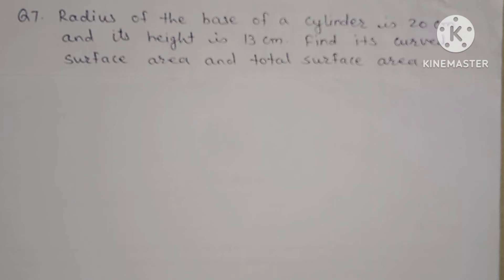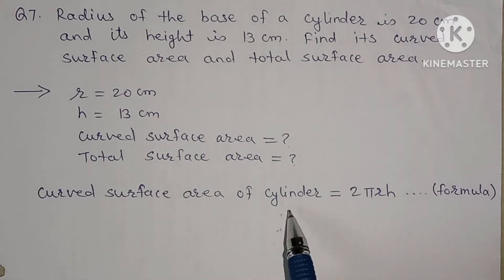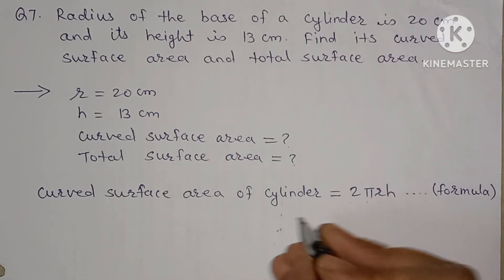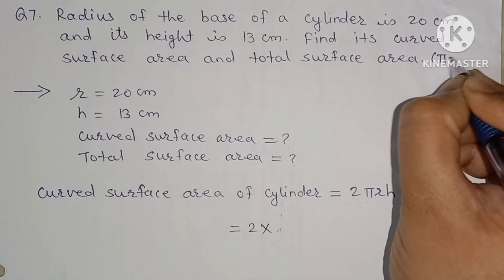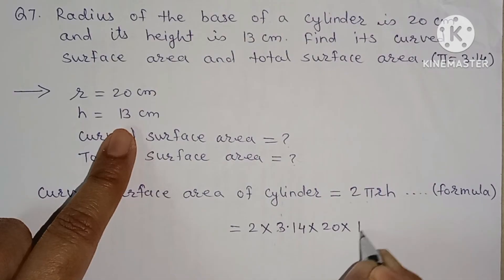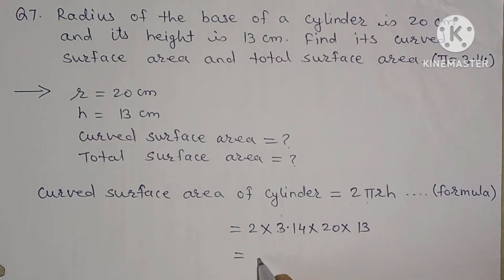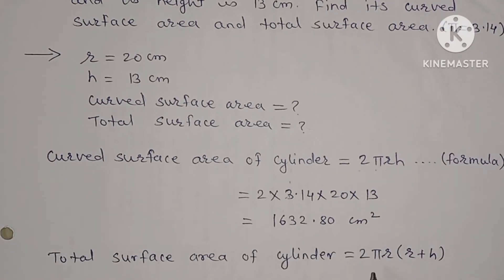Question number 7: radius of the base of a cylinder is 20 cm and its height is 13 cm. Find its curved surface area and total surface area. Curved surface area of a cylinder = 2πrh = 2 × 3.14 × 20 × 13 = 1632.80 square centimeter.